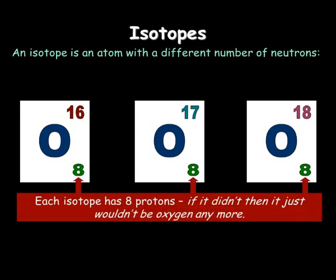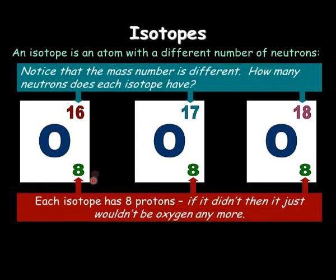We know it's oxygen because it has eight protons, but the mass can vary. We can have a look at the different masses. Oxygen must have eight protons, otherwise it would be a different element. For this one, eight and eight add up to 16, so there must be eight neutrons to give a mass of 16.